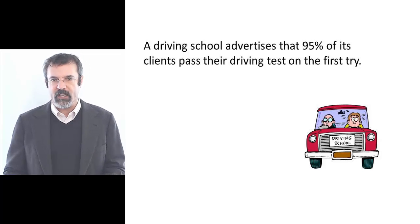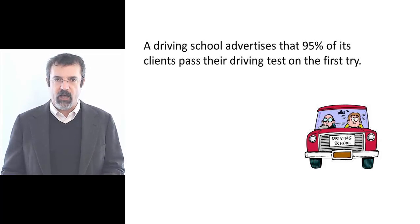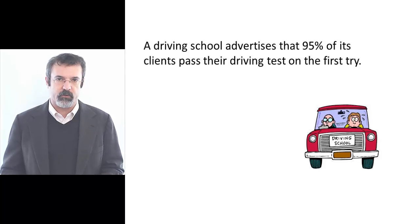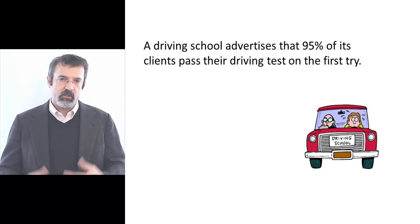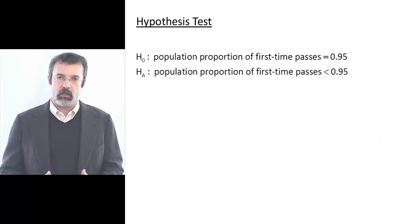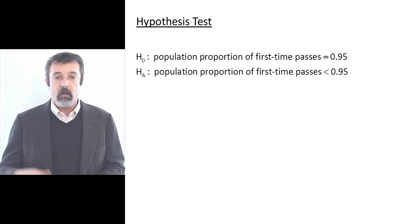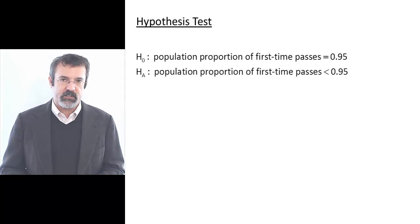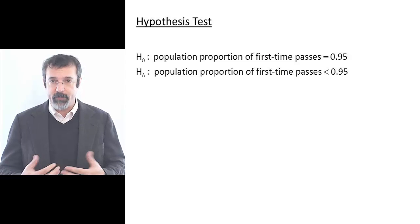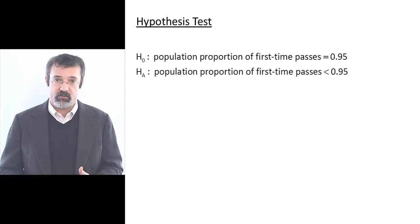Suppose that a driving school claims that 95% of its clients passed their driver's test on the first try. We want to test this claim. So we establish a null hypothesis that 95% of the clients passed their driver's test on the first try, versus an alternative hypothesis that less than 95% of the clients passed the driver's test on the first try.